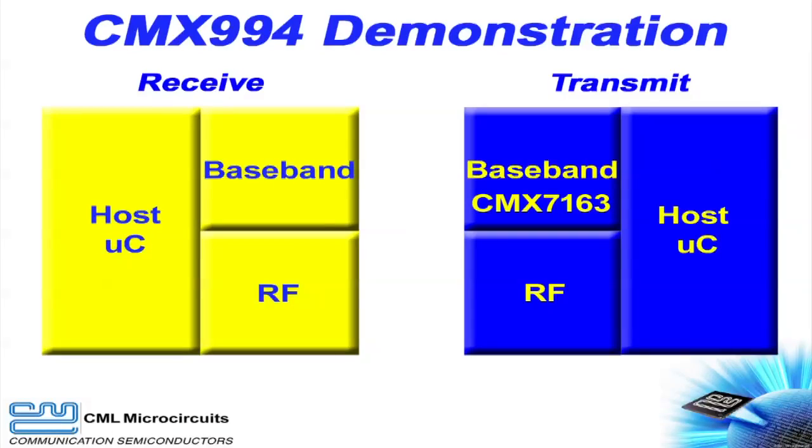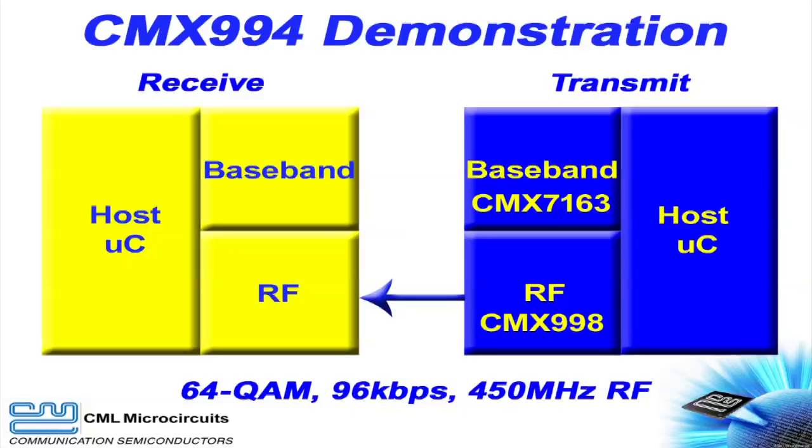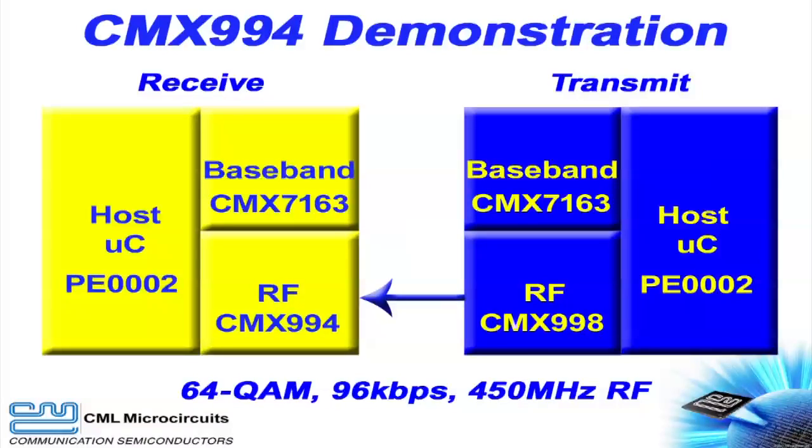For transmit baseband, the CMX7163 QAM modem will generate a 96 kilobit per second signal using 64 QAM. For transmit RF, the CMX998 Cartesian feedback device will linearize an RF power amplifier and transmit the 64 QAM signal. The RF carrier frequency is 450 megahertz. Receive RF will use the CMX994 direct conversion receiver. This highly integrated device performs antenna to zero IF baseband conversion. The CMX7163 QAM modem will act as the receive baseband and recover the original data. And the PE-0002 PC interface card will serve as the host controller for transmit and receive.